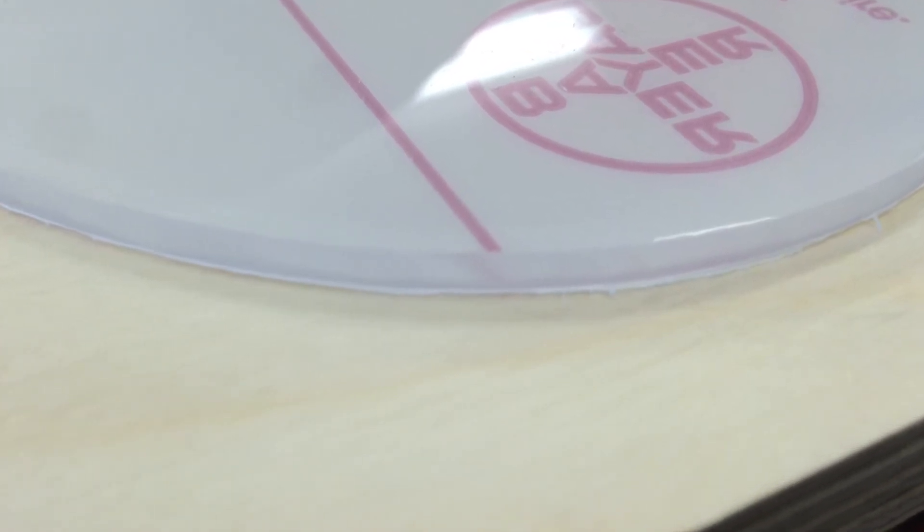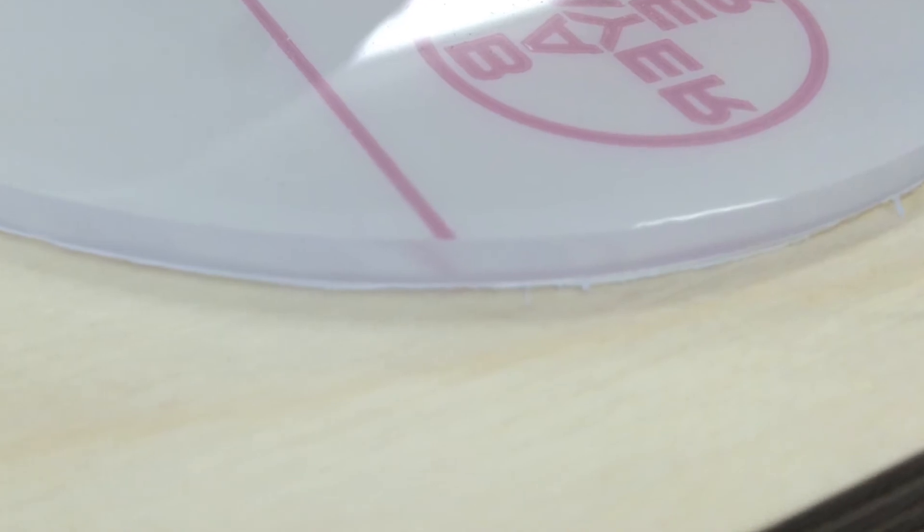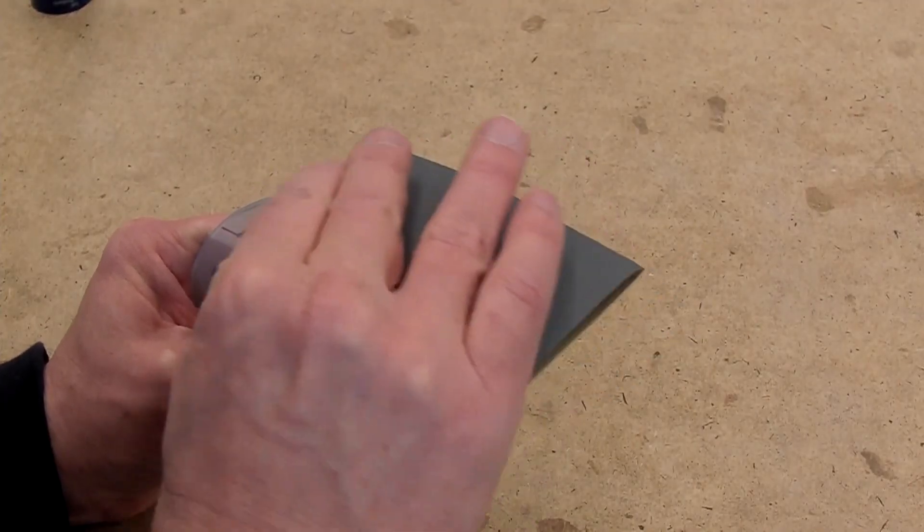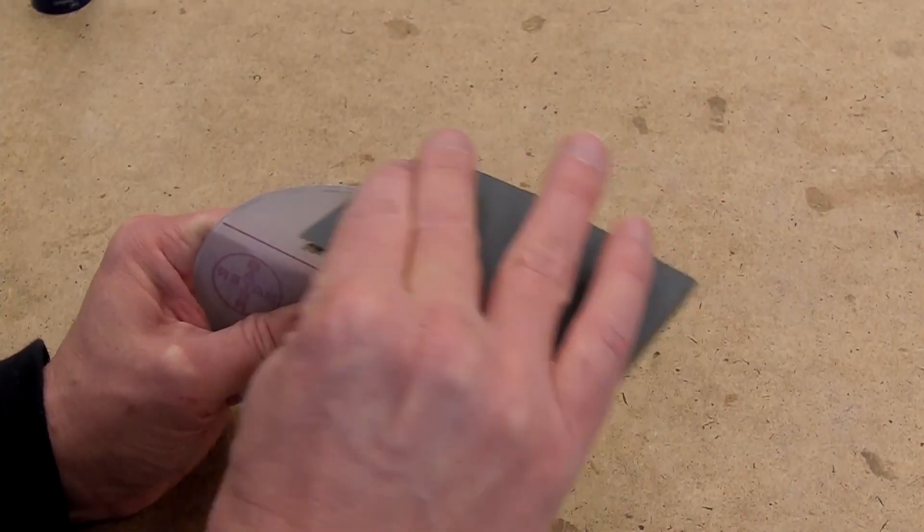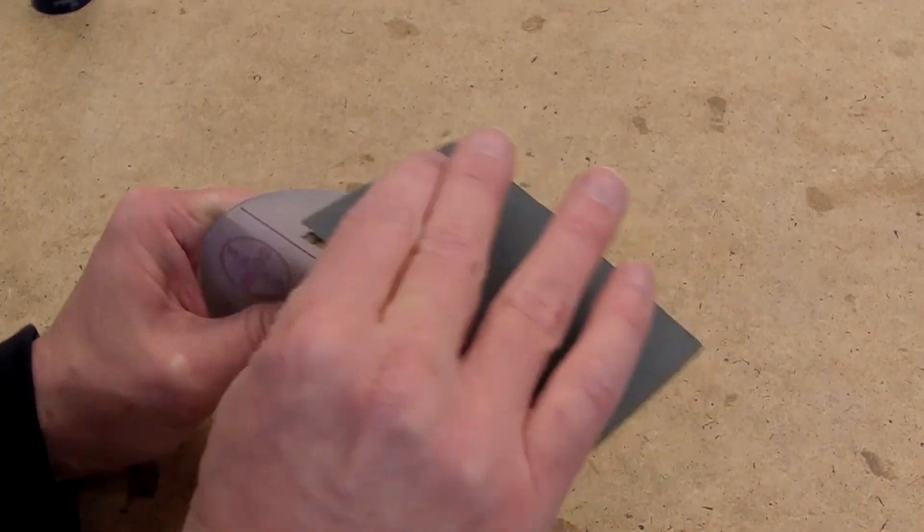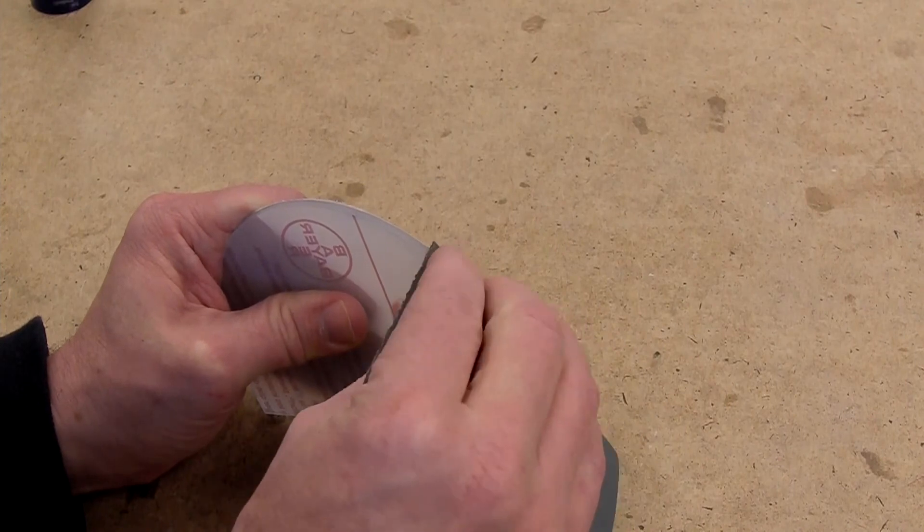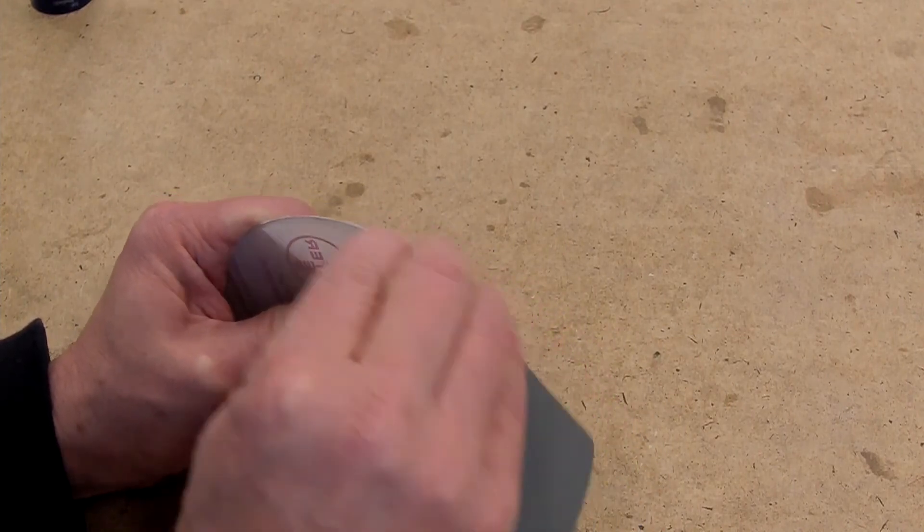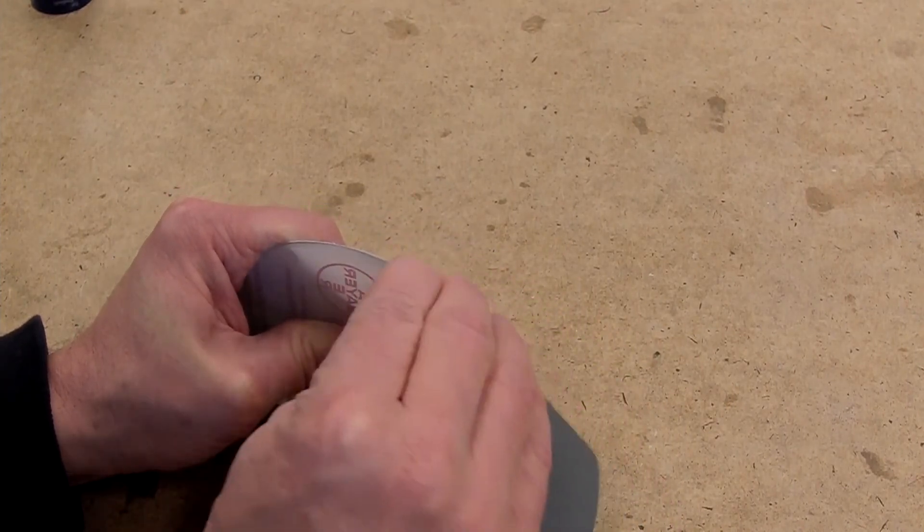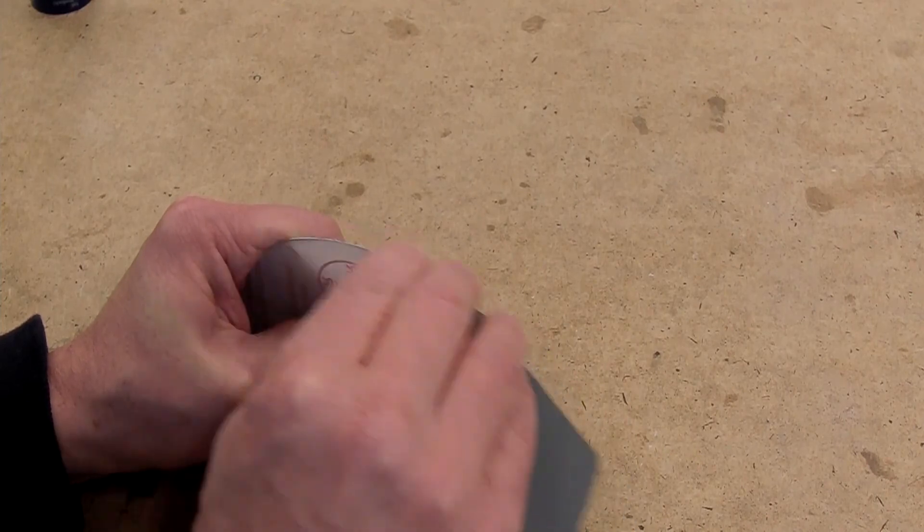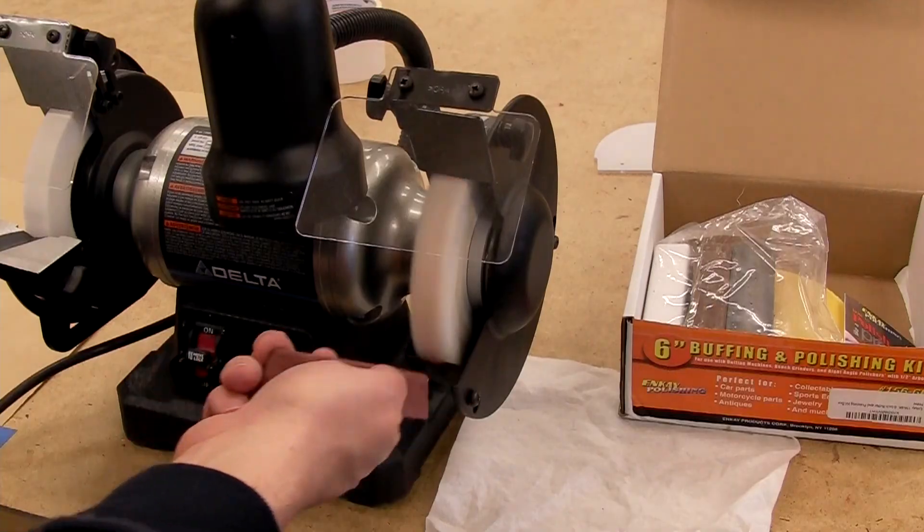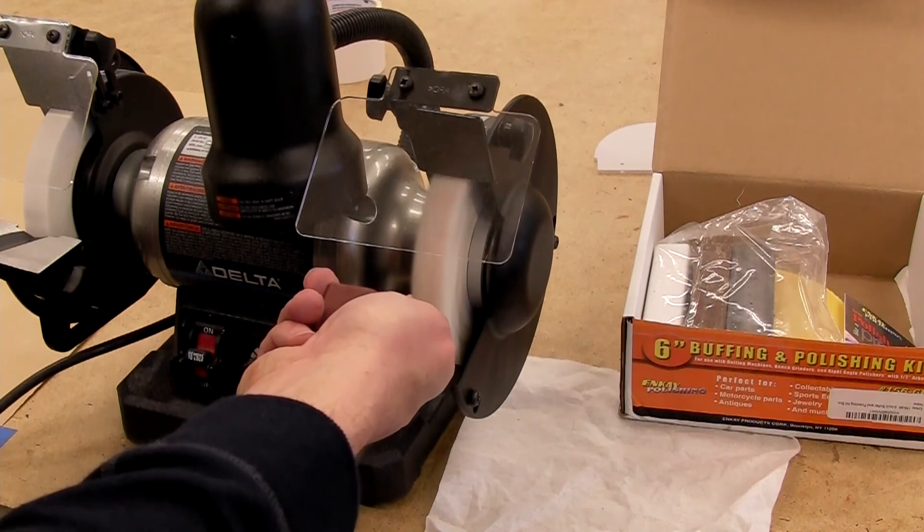Here's the edge after sanding with 220, 320, and 400. It's already pretty nice and smooth and you could definitely stop here if you were satisfied. You could go further sanding by hand now because you're taking off so little material that you won't round over the edges. Here I'm sanding with 600 and I'll follow this up with 800.